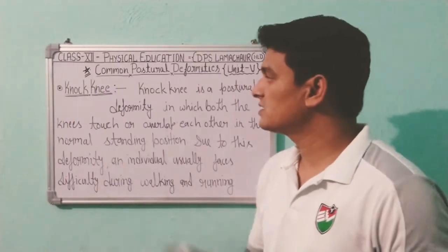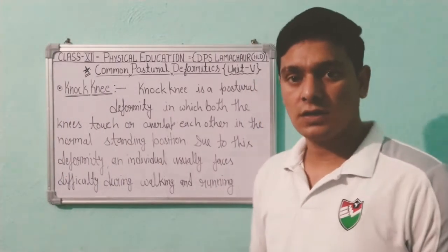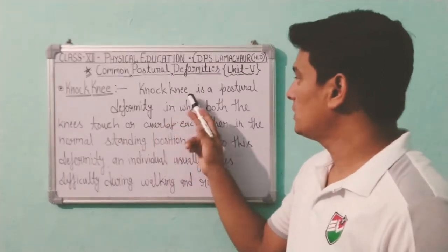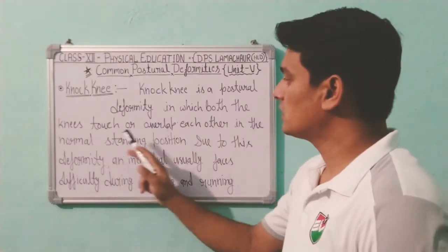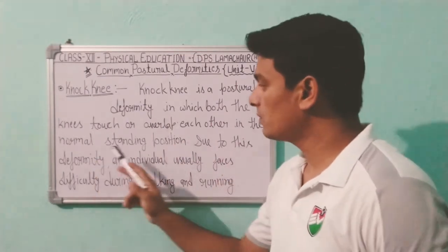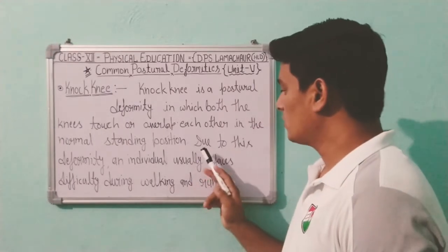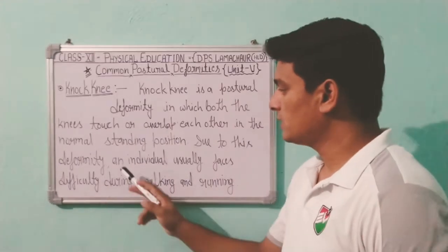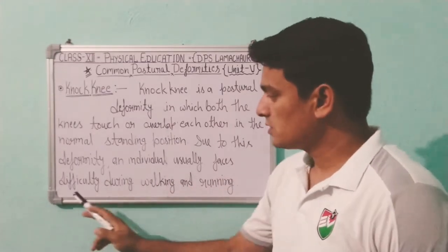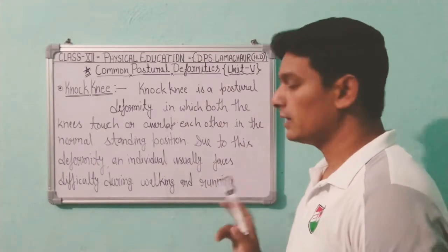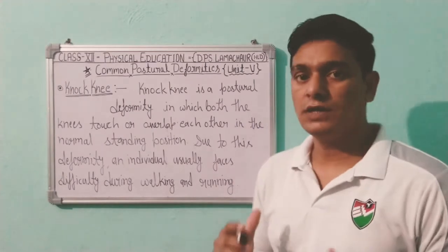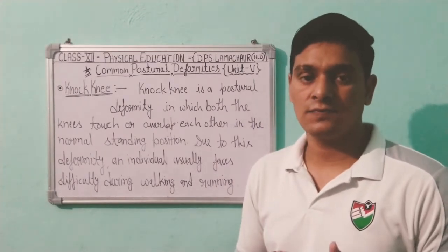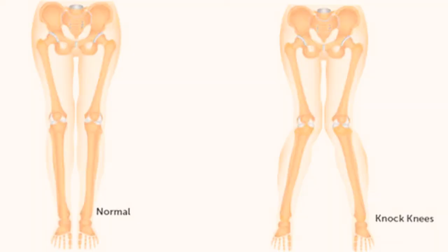The first deformity is knock knee. Knock knee is a postural deformity in which both knees touch or overlap each other in the normal standing position. Due to this deformity, an individual usually faces difficulty during walking and running. This is a deformity of the knees or legs. You can understand it better with the help of the picture shown.